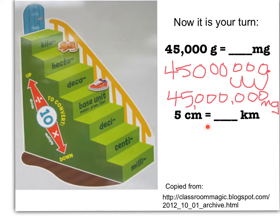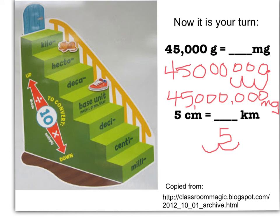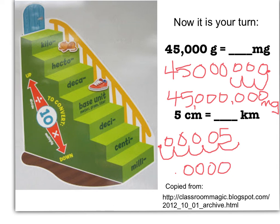We have 5 centimeters and we're going to turn it into kilometers. Find centimeter on the staircase and kilometer way up at the top — count one, two, three, four, five steps up. Since we went up the staircase, we move five places to the left. Starting with 5, the decimal point is right after it — go one, two, three, four, five places to the left and put your decimal point, filling in with zeros. The answer is 0.000005 kilometers.